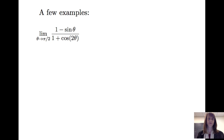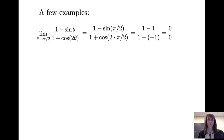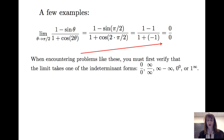Let's consider a few examples. Let's look at the limit of (1 minus sin θ) divided by (1 plus cos 2θ) as θ approaches π/2. Before we begin, we have to make sure that the form is one of the indeterminate forms identified earlier. If we look at (1 minus sin(π/2)) divided by (1 plus cos(2·π/2)), we get (1 minus 1) divided by (1 minus 1), which is 0 divided by 0. So therefore, we can apply L'Hôpital's rule.